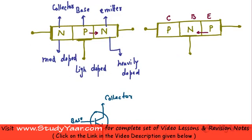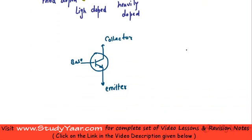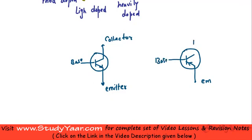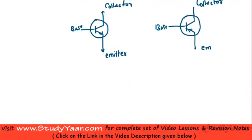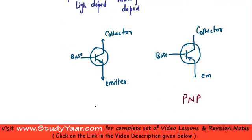Now your PNP transistor has a symbol which looks like this — here the arrow is pointing the other way. This is your emitter, this is your base, and this over here is your collector. Just see, your current is going from emitter towards base. Therefore this is a PNP transistor. So just remember your notations for your NPN and PNP transistor.